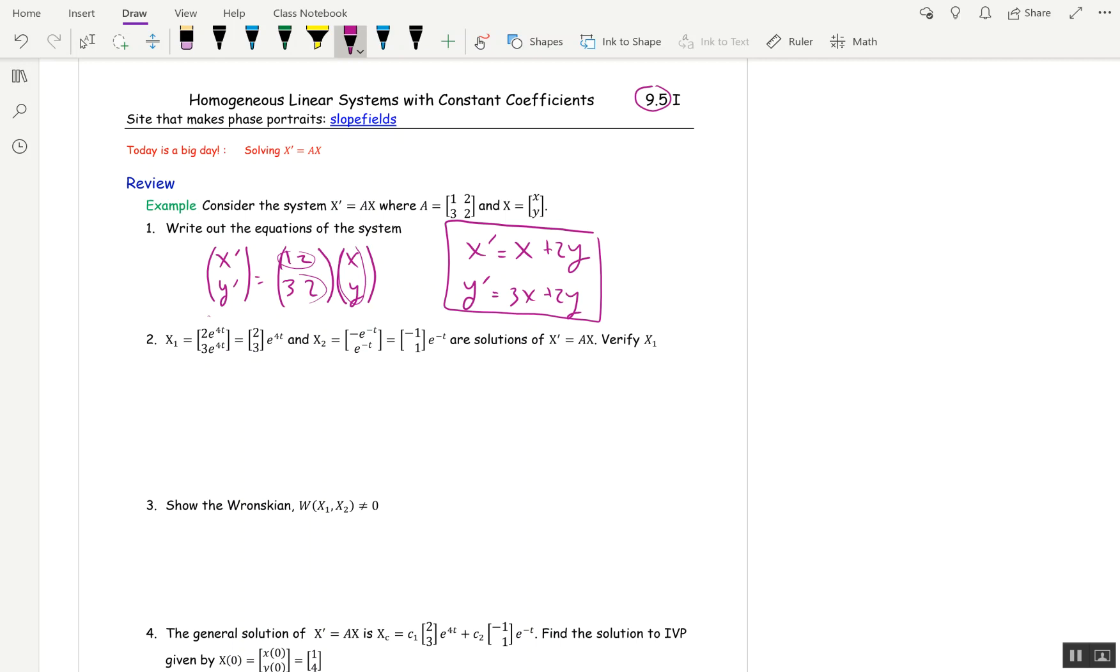This is the part where we have to work with the left-hand side and the right-hand side separately, so we're not assuming what we're trying to show. The left-hand side is X₁', and that's equal to—looking at X₁ in this form, I just take the derivative—(8e^(4t), 12e^(4t)).